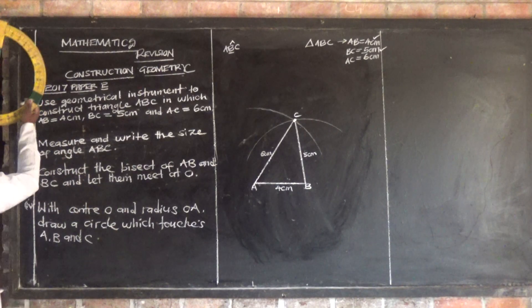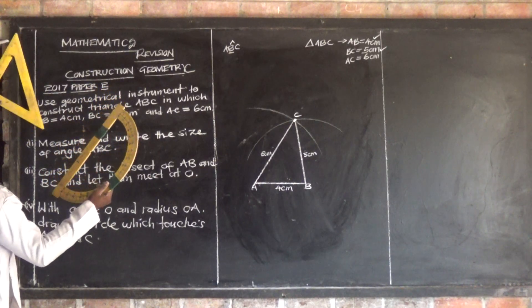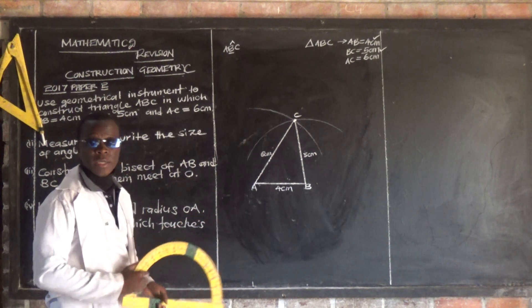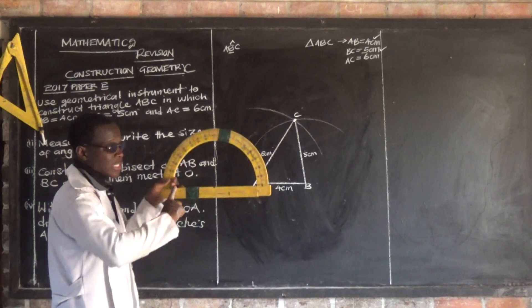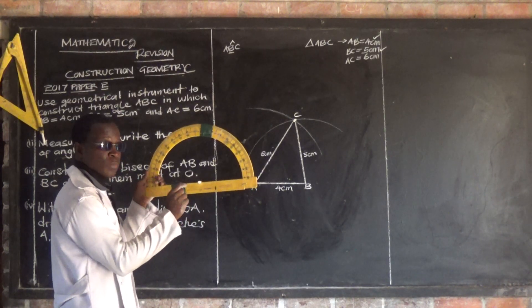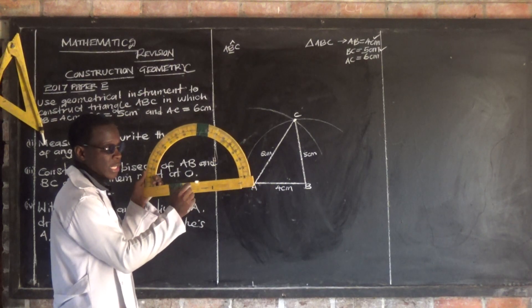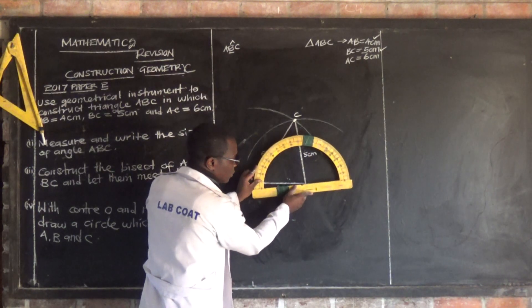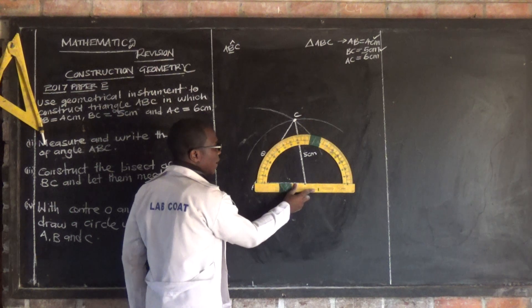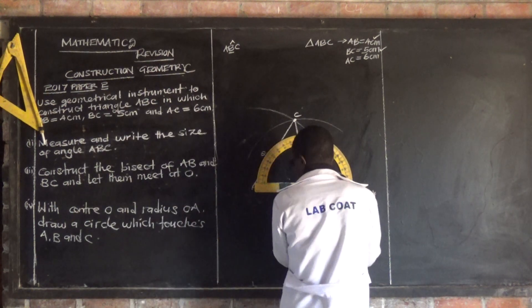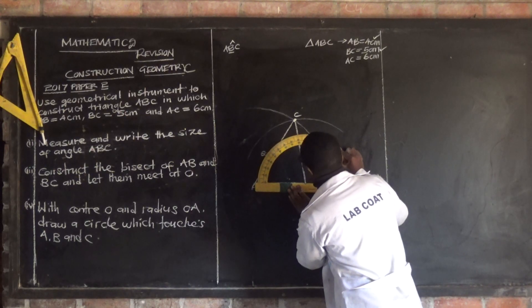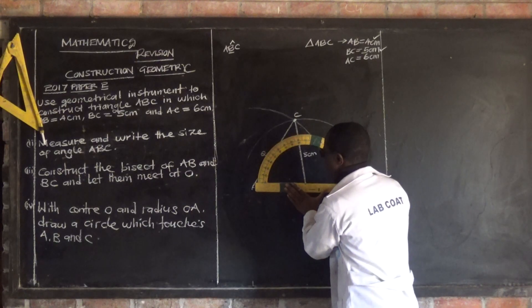So this is my protractor. I hope you know the protractor. I want to measure angle ABC, and the angle is at B. This protractor has got a center — this is the center of the protractor. Where this mark is, that is where B is supposed to be. I need to put B where this center is. In my case, the angle is 80 degrees.